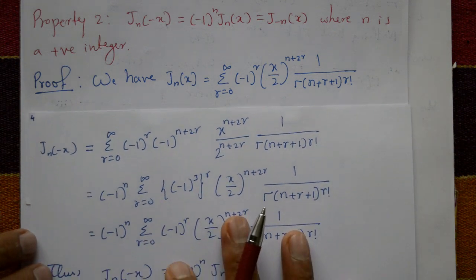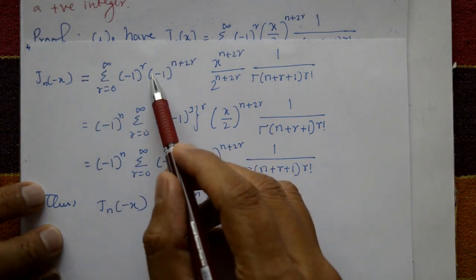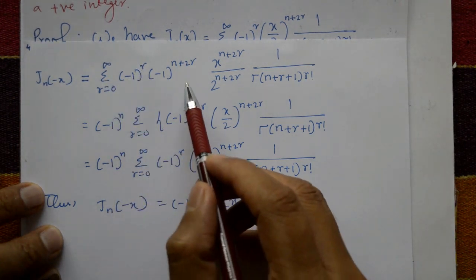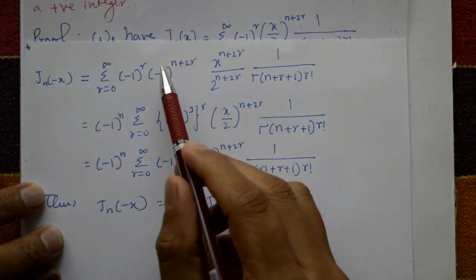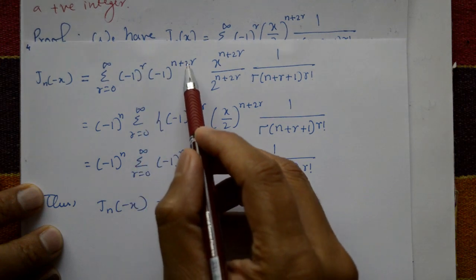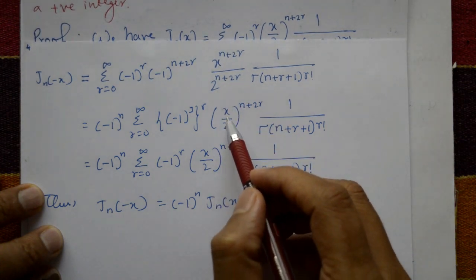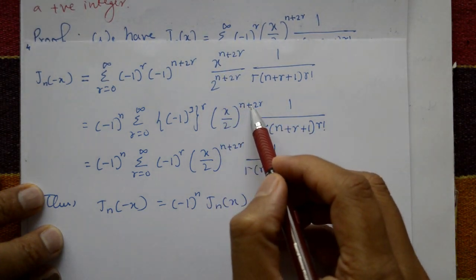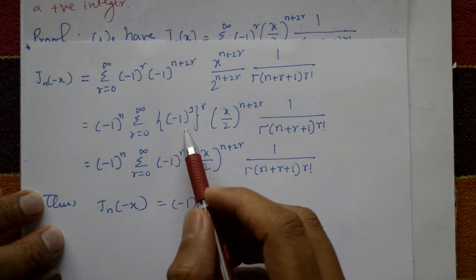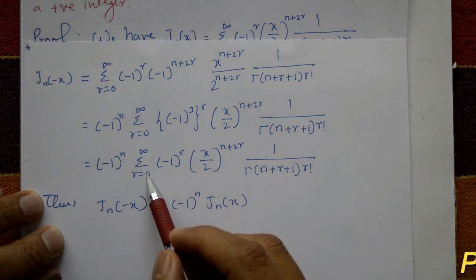Into r factorial. Now take minus 1 raised to n outside the summation. So we have minus 1 raised to n, times summation of minus 1 raised to r and minus 1 raised to 2r — that is 3 times, minus 1 cubed raised to r. Since 1 plus 2 equals 3, minus 1 cubed raised to r. And this is x over 2 same n plus 2r, as it is. So minus 1 multiplied 3 times again gives minus 1.